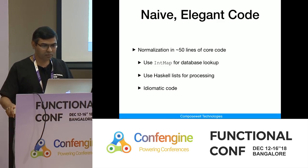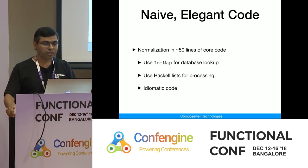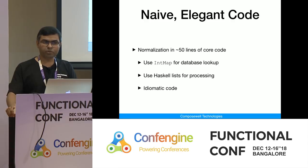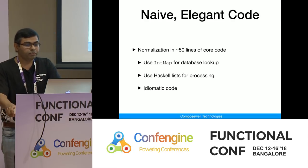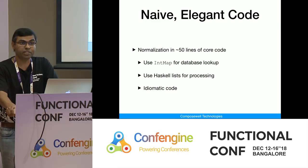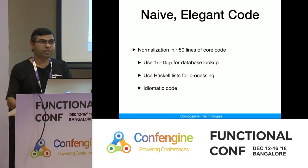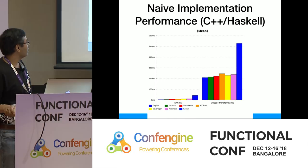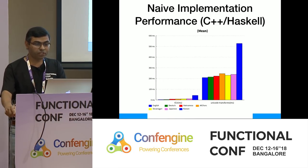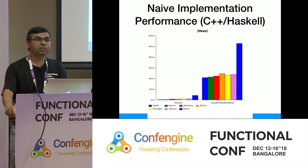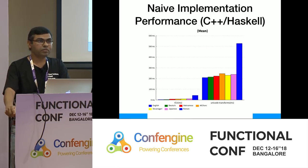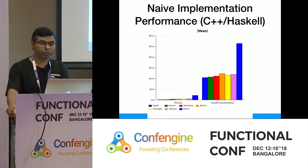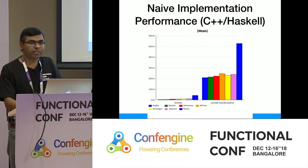There was a library written by Antonio Nicosio — around 50 lines of code for normalization. It used a map for database lookup of characters and Haskell lists for processing. This was idiomatic code: in just 50 lines you could do whole normalization, very elegant code. The performance compared to ICU: ICU takes about 2.7 milliseconds for English, while the elegant Haskell code was close to 200 milliseconds — about 20 times worse, and in the worst case maybe 70 or 80 times worse.